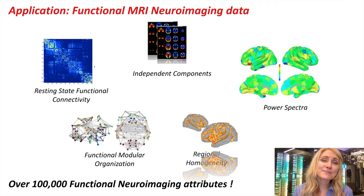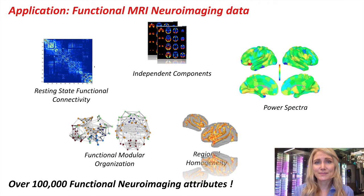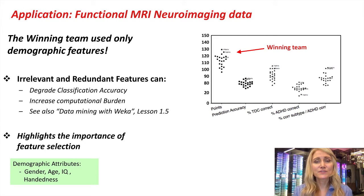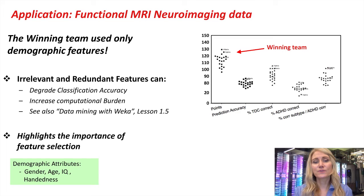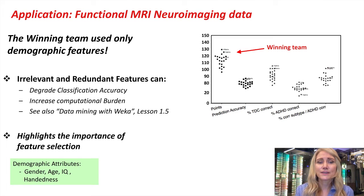My team placed third in this competition using a voted perceptron, as implemented in WEKA. But the overall results of this competition were very unsatisfying. As it turned out, the winning team used only demographic features — a very small number of attributes overall. Classification using these features alone outperformed all the other teams that used demographic features in combination with MRI data. This result really highlights the importance of using feature selection, either as a separate step or as part of a regularization scheme, since the inclusion of irrelevant and redundant features can vastly degrade the performance of a classifier.